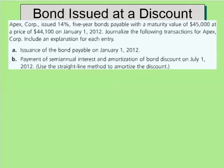Let's look at an example problem dealing with bonds issued at a discount. Apex Corporation issued 14% five-year bonds payable with a maturity value of $45,000 at a price of $44,100 on January 1, 2012. We need to journalize the issuance of the bond payable on January 1st, and then the payment of the semi-annual interest and amortization of the bond discount on July 1st.